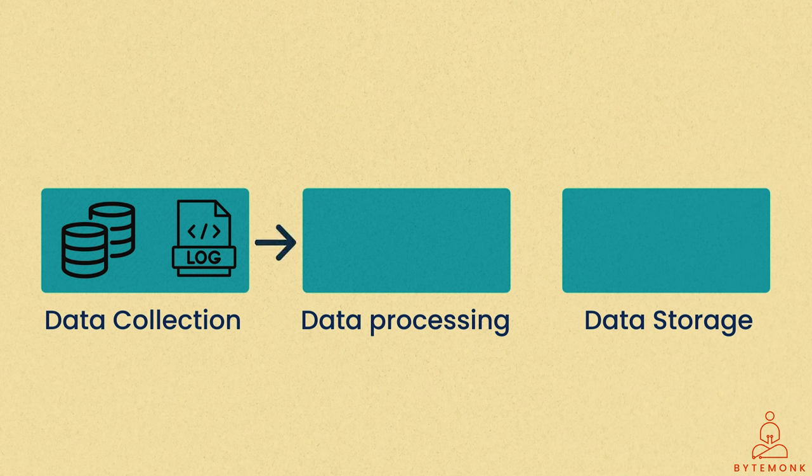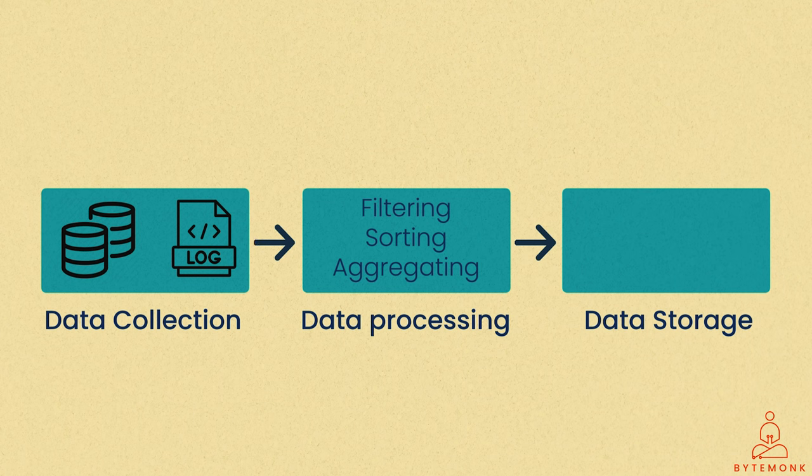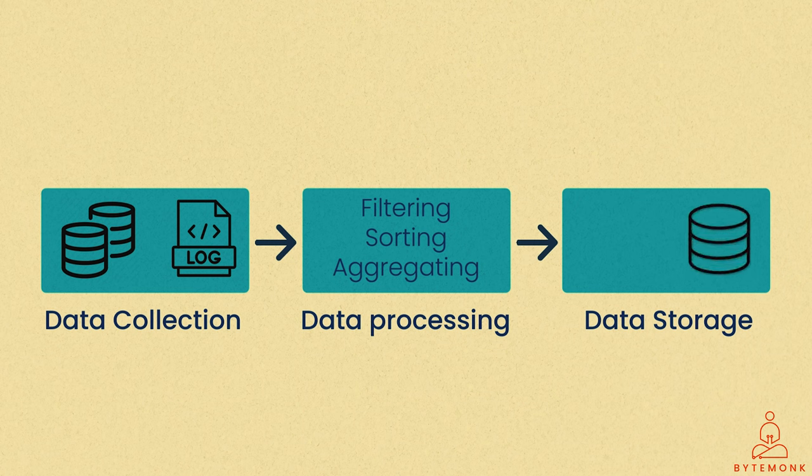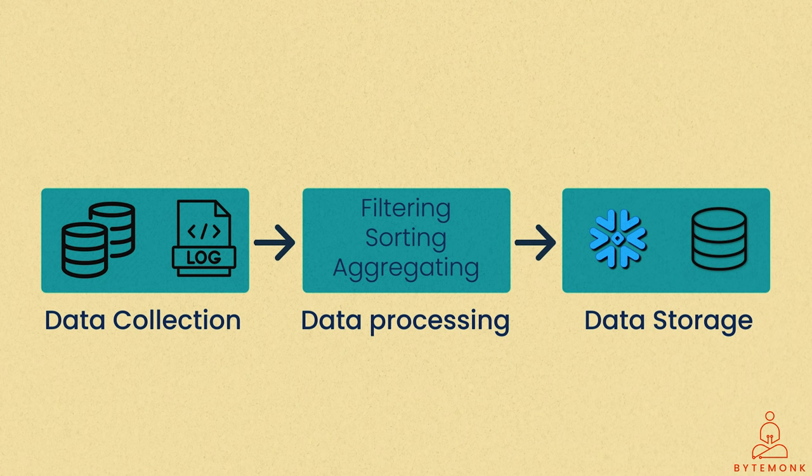Once a batch of data is collected, it is processed in bulk. This involves applying various operations like filtering, sorting, aggregating, and analyzing the data according to predefined criteria or business logic. After processing, the results are typically stored in a data warehouse, database, or other storage systems for further analysis, reporting, or decision-making. Batch processing jobs may also generate reports or visualizations that provide insights into the processed data.